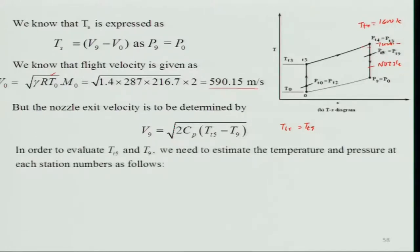To evaluate Tt5 and T9, we need to estimate the temperature and pressure at each station. For an ideal cycle, you can sometimes skip some steps, but in a real cycle you must follow the same systematic procedure. It is better to follow this systematic way.